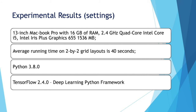Regarding the experimental settings: we used a MacBook Pro with 16 gigabytes of RAM and a 2.4 gigahertz quad-core Intel Core i5. The average running time on a 2x2 grid layout is 40 seconds, including all permutations, saliency map extraction, and computation of ES score values. We used Python version 3.8.0 and TensorFlow 2.4.0 as the deployment framework.